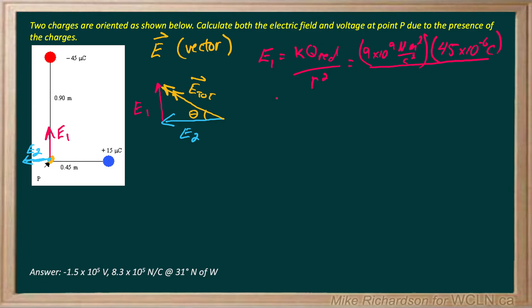All divided by how far away from the charge I am which is 0.9 meters, and we have to square it. Now when I do that I end up getting the value of E1 as 5 times 10 to the 5 newtons per coulomb.